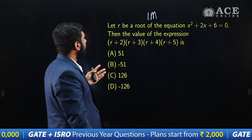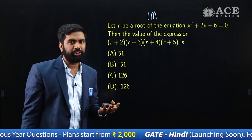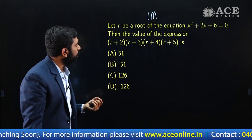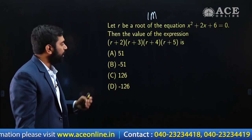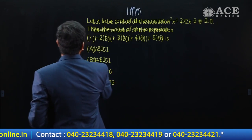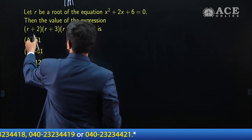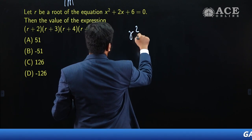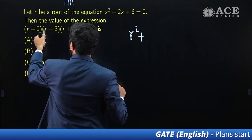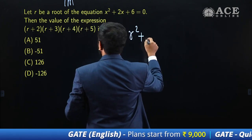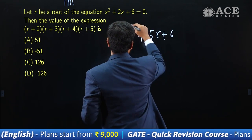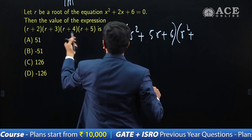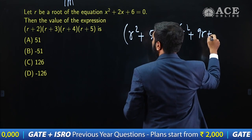Let R be a root of the equation x² + 2x + 6 = 0. Then find the value of (r+2)(r+3)(r+4)(r+5). What is (r+2)(r+3)? It is r² + 5r + 6. And (r+4)(r+5) gives r² + 9r + 20.